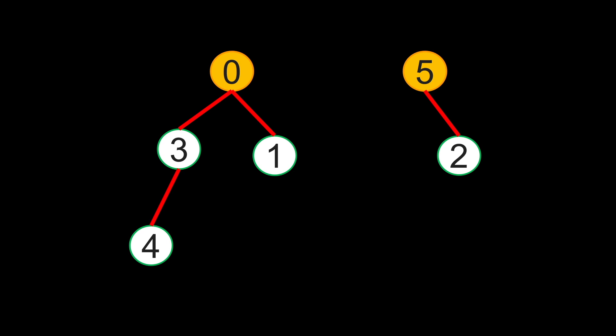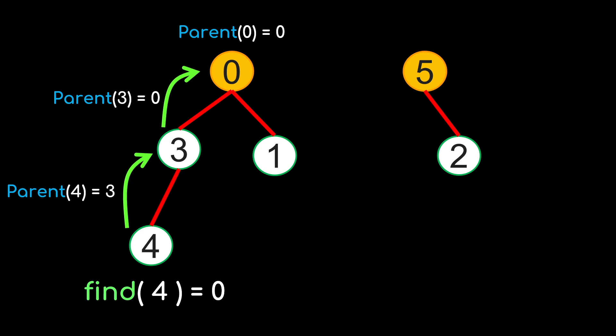For any given element, how do we find the representative? Well, we must travel upwards the tree towards the root. In other words, we need to keep traveling towards the parent until we reach the top. As an example, suppose we want find of 4. The parent of 4 is 3, so we travel upwards to 3. And the parent of 3 is 0, so we travel up to 0.